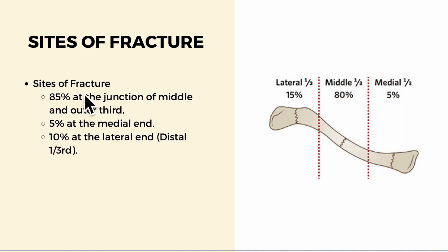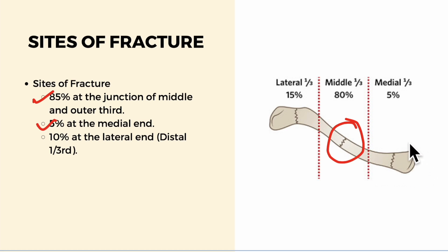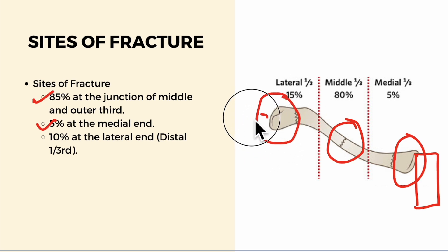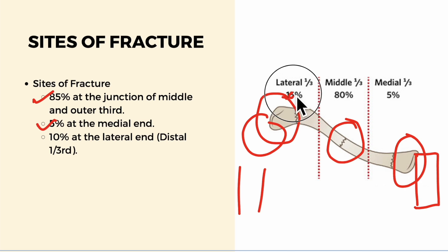Looking at the main sites of fracture: 85 percent occur at the junction of the middle and outer third; five percent at the medial end, that is towards the sternum; and ten percent at the lateral end, that is away from the body near the shoulder joint.